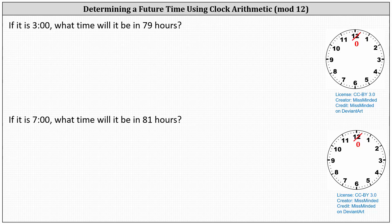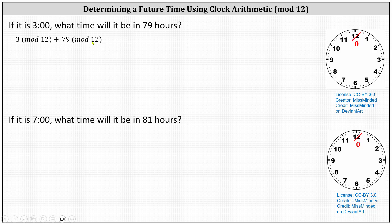To begin, if it is three o'clock, what time will it be in 79 hours? Because clock arithmetic is mod 12 arithmetic, we can write this as three mod 12 plus 79 mod 12.